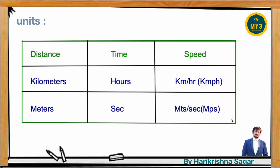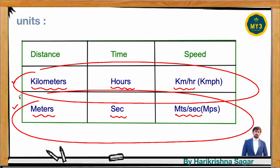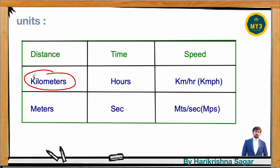Sometimes questions will give distance in kilometers and time in minutes, but ask for speed in km per hour — so you must do the conversion. Don't blindly multiply or divide the parameters. Express everything consistently: either in kilometers/hours, or in meters/seconds. For example, if they give time in minutes, convert to seconds before solving.